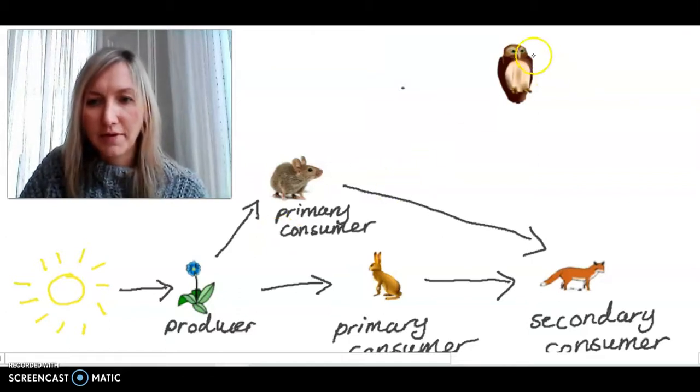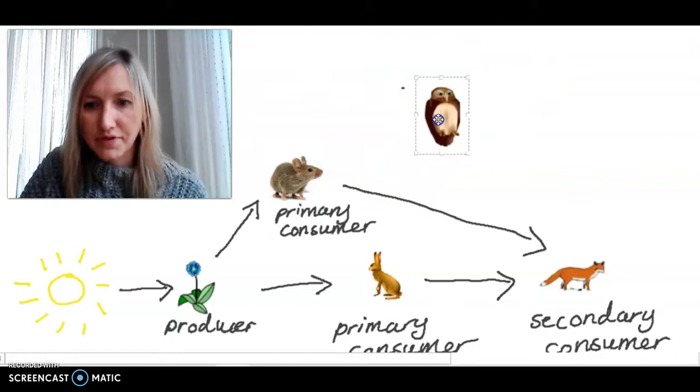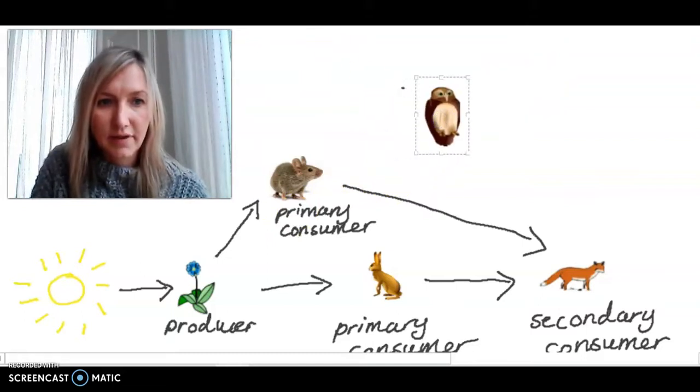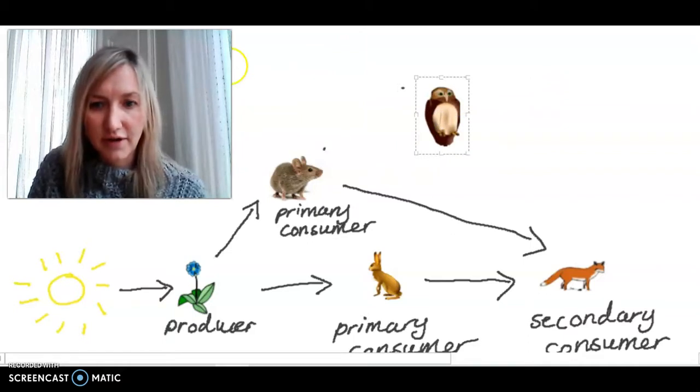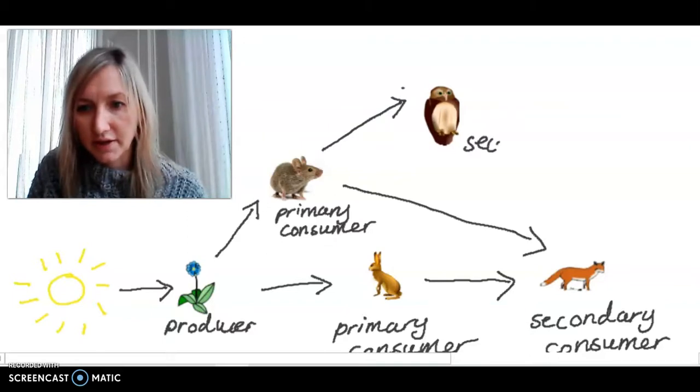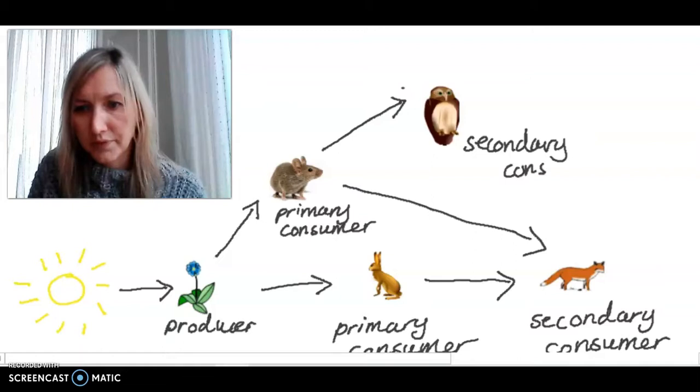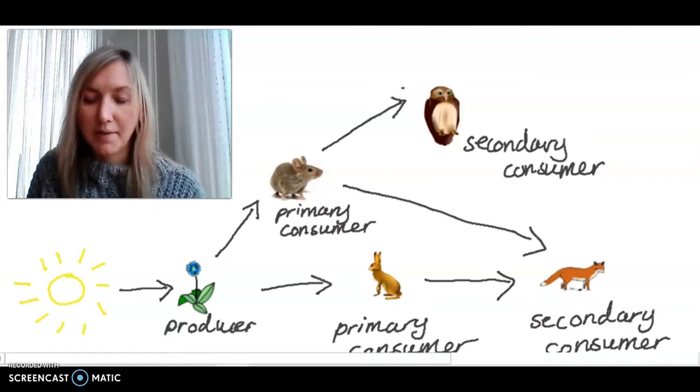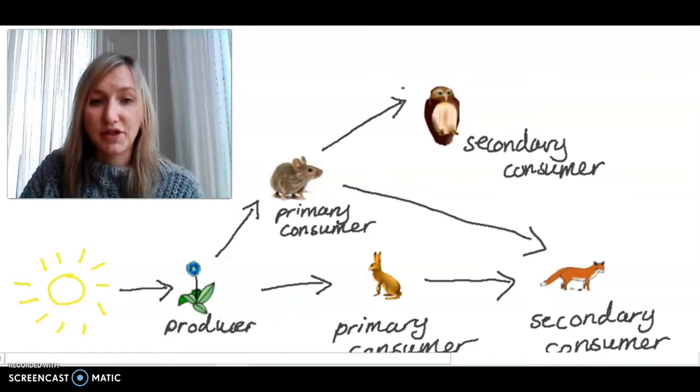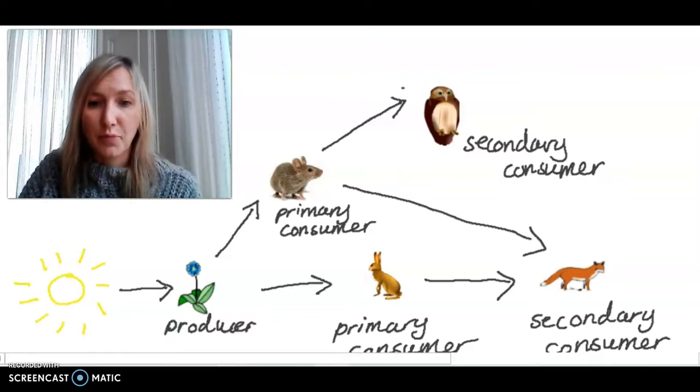And then finally in this food web, this owl that we have here, he eats the mouse as his main diet. So I'm going to add him in and then with an arrow showing the transfer of energy from the mouse to the owl. That means that the owl is also a secondary consumer. This is one example of a food web showing the interrelationships and the feeding relationships of the animals within an environment.